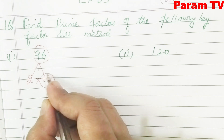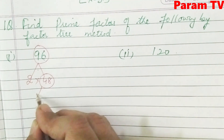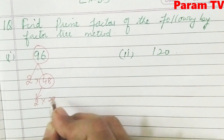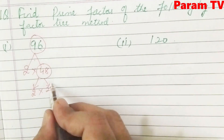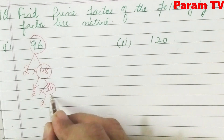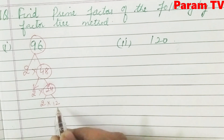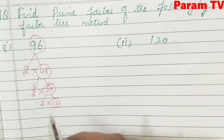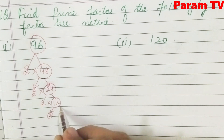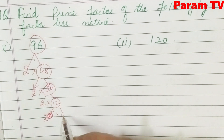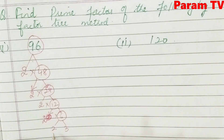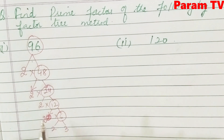48 is again circled. 48 divided by 2 gives 2 into 24. 24 is again circled — 2 into 12. 12 is again circled because it is not a prime number — 2 into 6. 6 is again circled — 2 into 3. Which numbers are prime, those will not be circled.